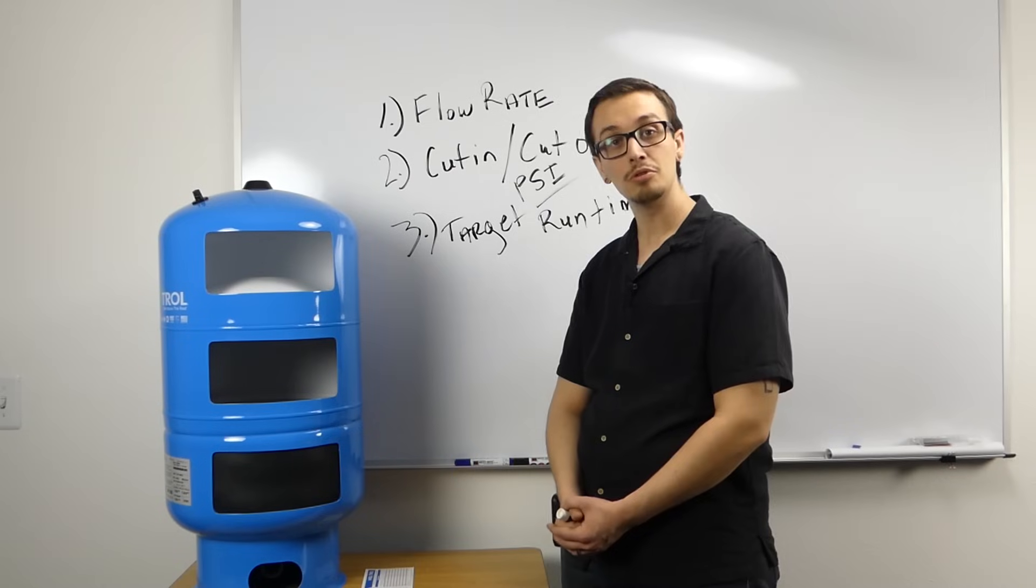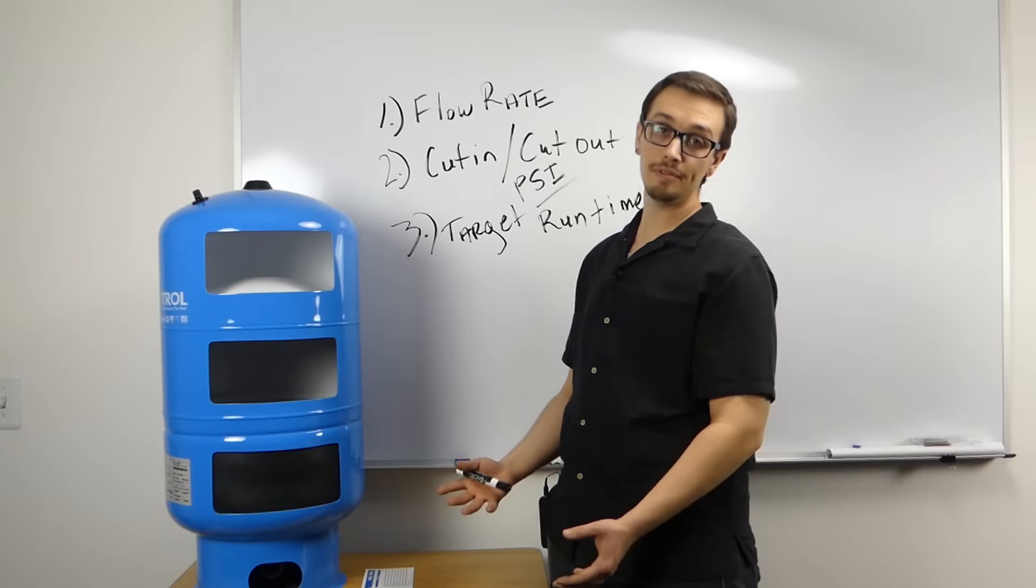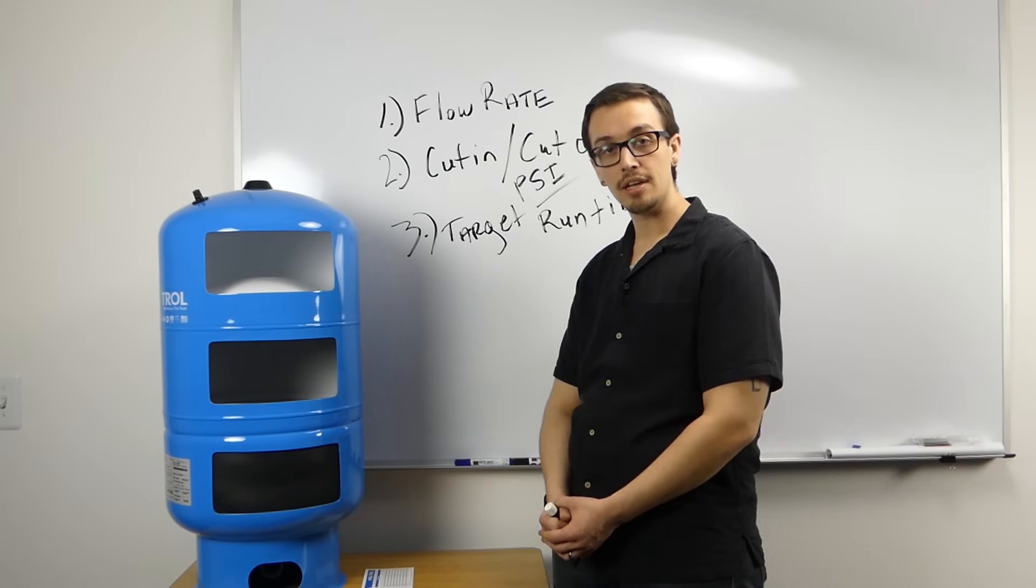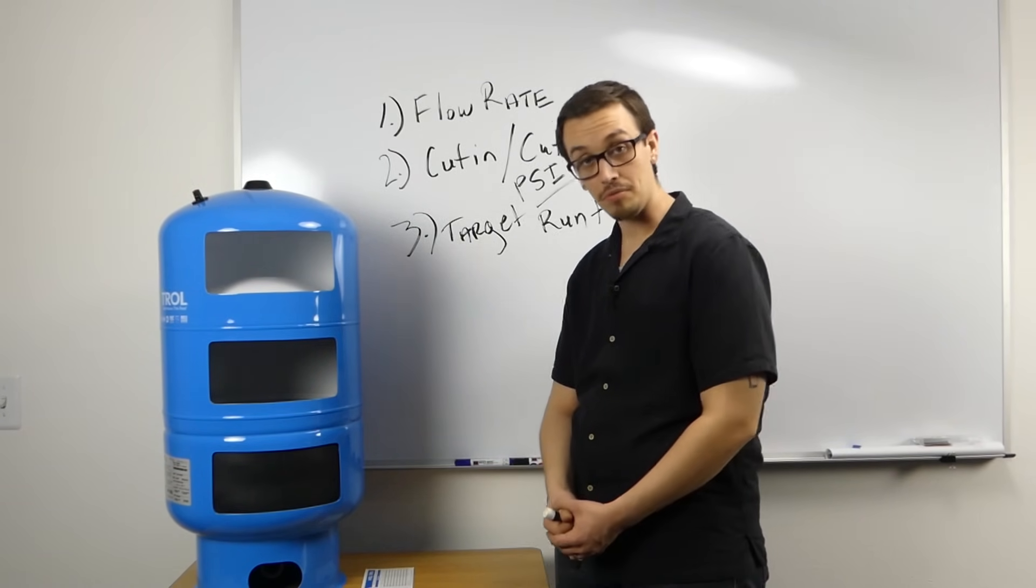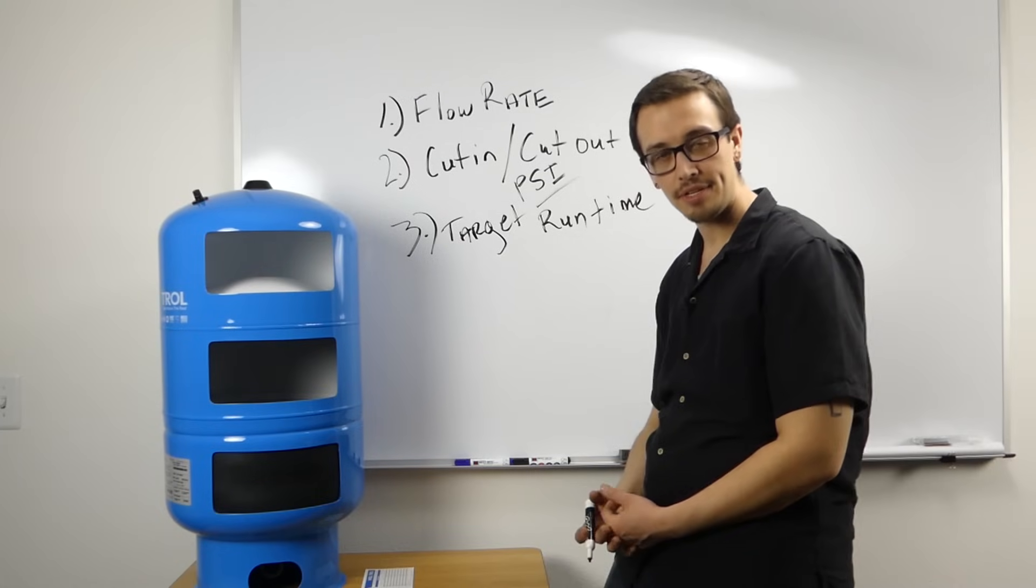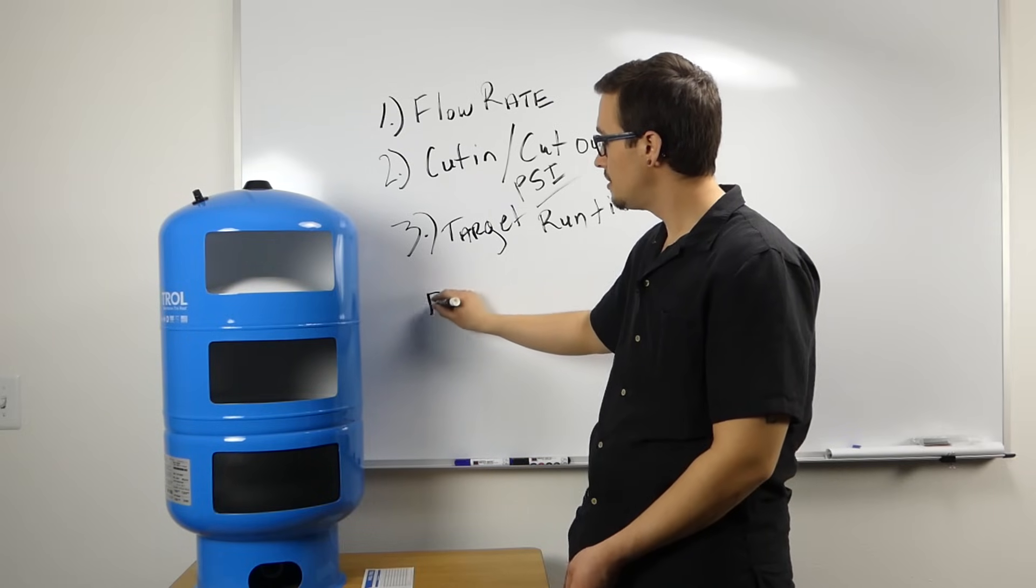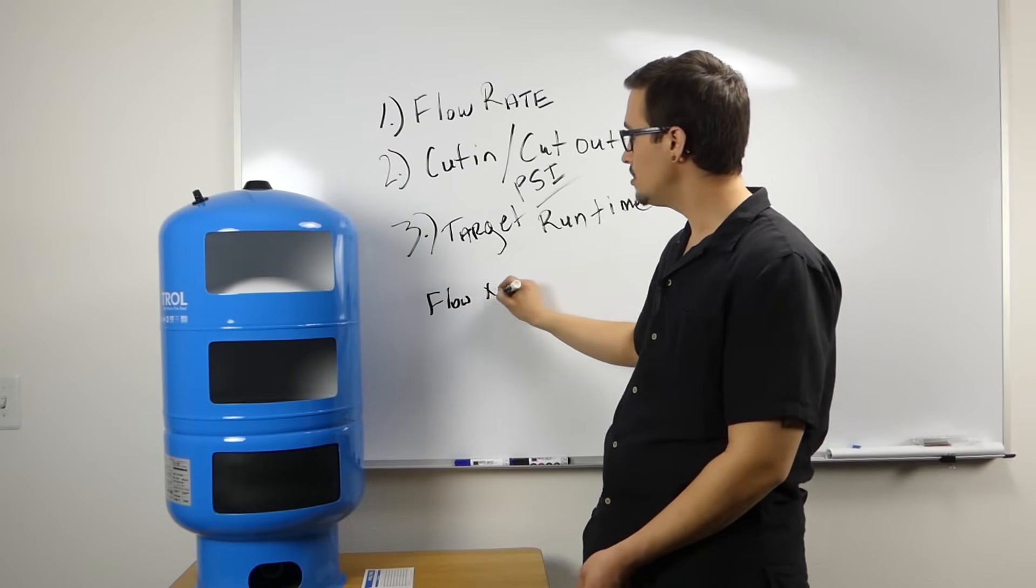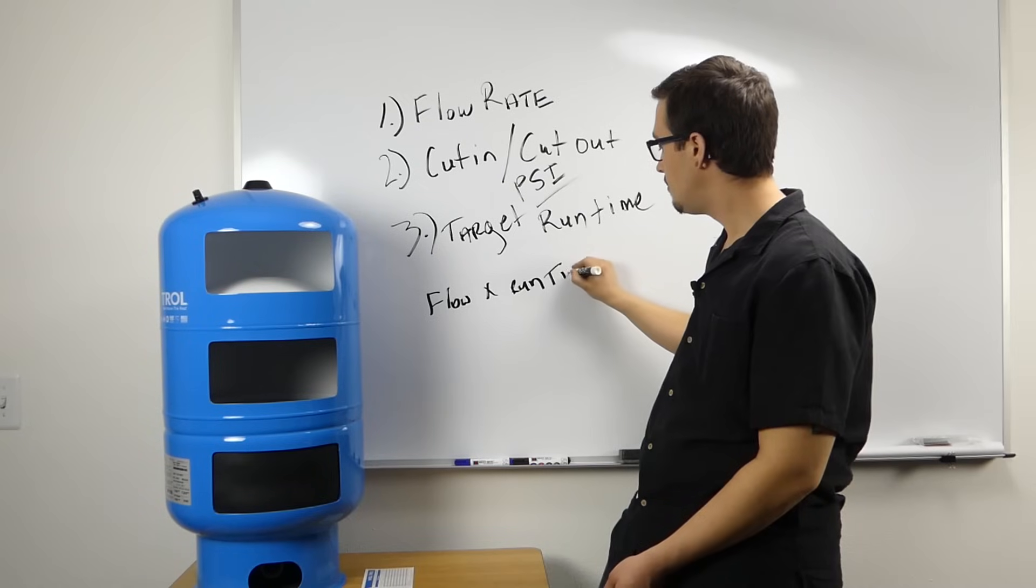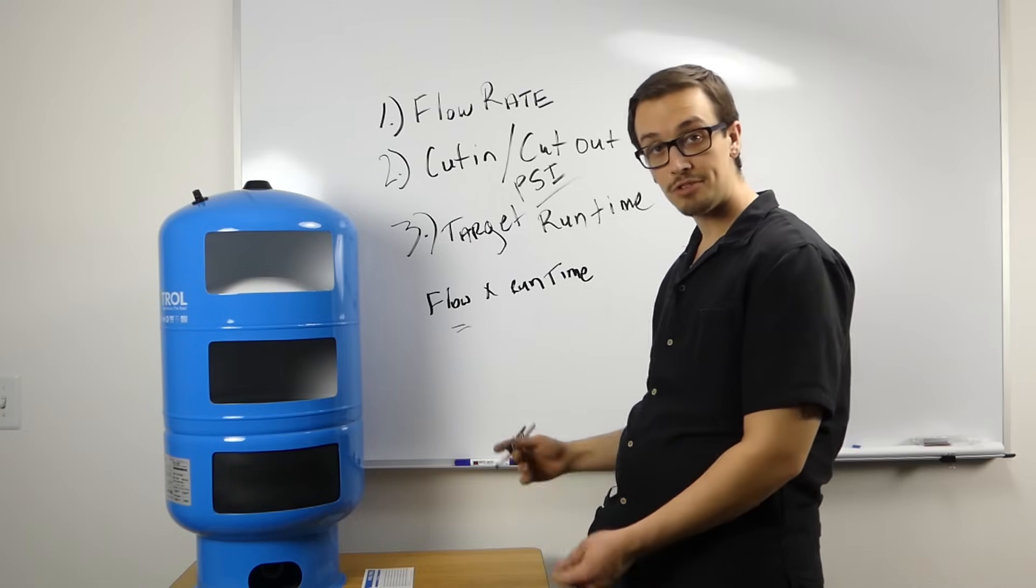As your flow rate increases, so does the recommended drawdown capacity of the pressure tank that you select. As you increase in flow rate, the amount of extra tank needs to increase with it at an even greater rate. An easy equation to help you determine what your tank drawdown capacity will be is to take your flow rate and multiply that by the run time, and you will have the tank drawdown capacity.